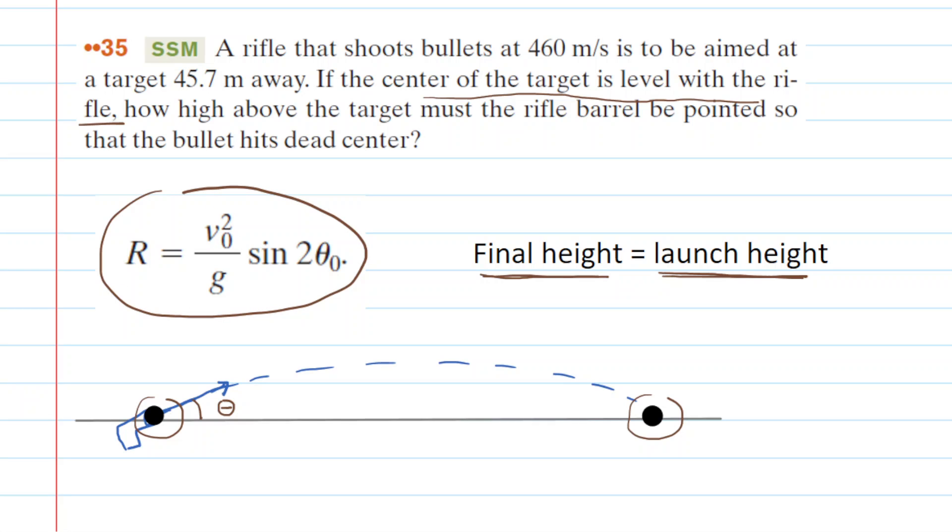The range is simply the horizontal distance traveled by the bullet, so from the initial position to the final position. That right there would be the range, and that was given to us as 45.7 meters. In addition, we know g, that's just negative 9.8 meters per second squared. We also know the initial launch velocity was 460 meters per second.